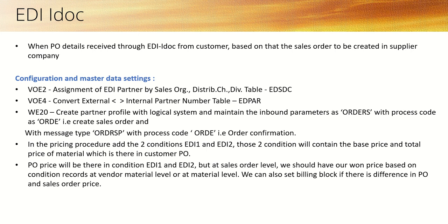The first configuration step we have to do is TCode VOE2, where we have to do assignment of partners. Whenever we want to create a sales order in VA01, we have to enter the order type, sales organization, distribution channel, and division. To perform all this activity automatically through the add-off, we have to do that auto-determination configuration in VOE2.